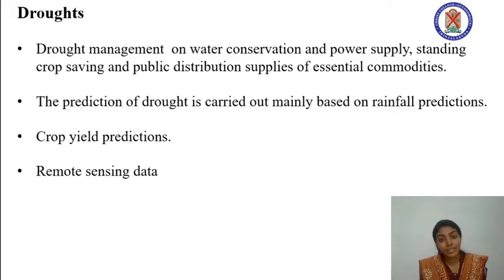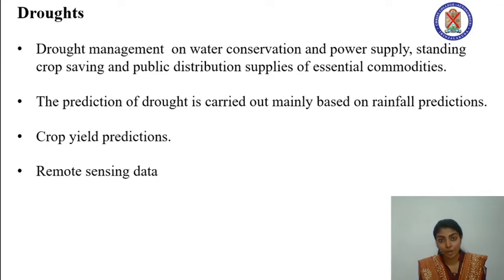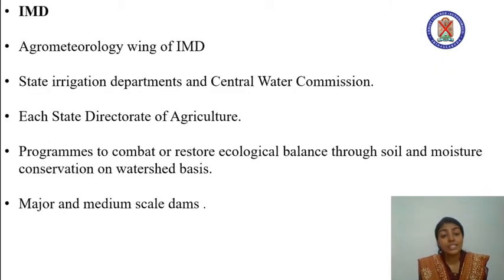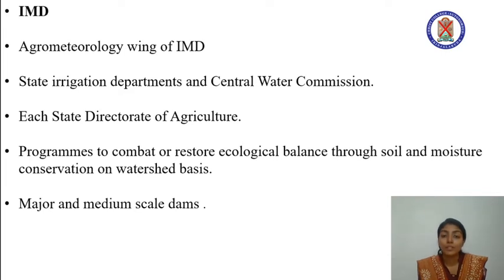The prediction of drought is mainly carried out based on rainfall predictions, and since drought has a huge impact on agriculture, crop yield predictions are also based on rainfall predictions, which include long-range, short-range, and medium-range rainfall predictions. Remote sensing data provides a lot of information for these predictions. The India Meteorological Department (IMD) is responsible for monitoring rainfall and agrometeorology, and prepares a weekly aridity anomaly map for mitigating drought.